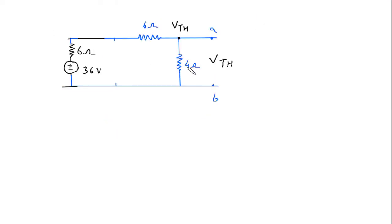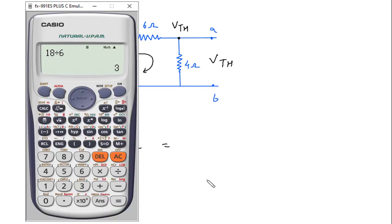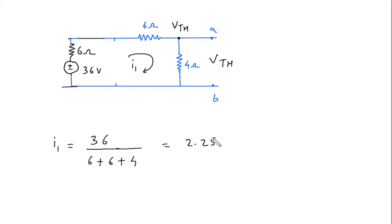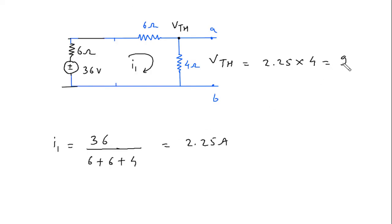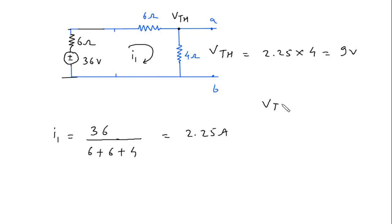Now we have to find the current through the 4 ohm resistor. Let's assume this is current I1. So I1 is equal to 36 by (6 plus 6 plus 4), which gives 2.25 ampere. From this we can find the value of Vth: Vth is equal to 2.25 ampere into 4 ohm, which is 9 volt. Therefore Vth is equal to 9 volt.